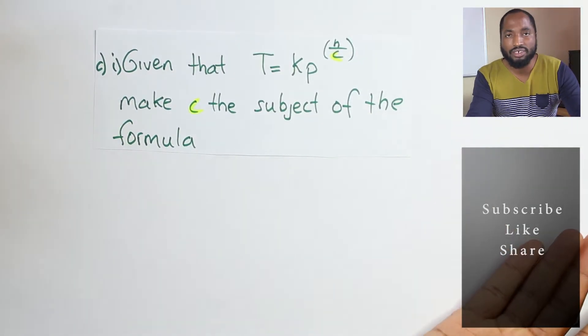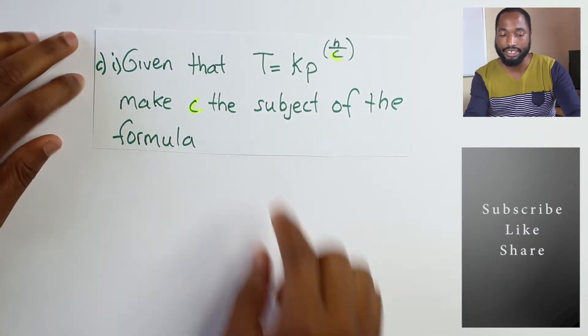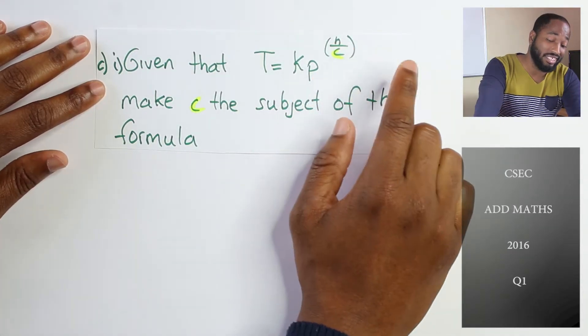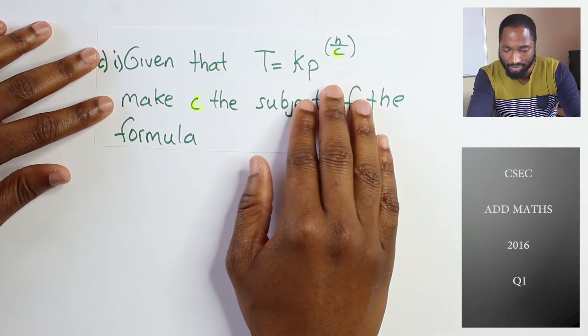Alright, so people asked a question on logs and now we do our logs question. This is 2016, last part of question one at C. Given that T is equal to KP to the power of h/c, make C the subject of the formula. So to make this the subject of the formula, best thing to do is use logs.